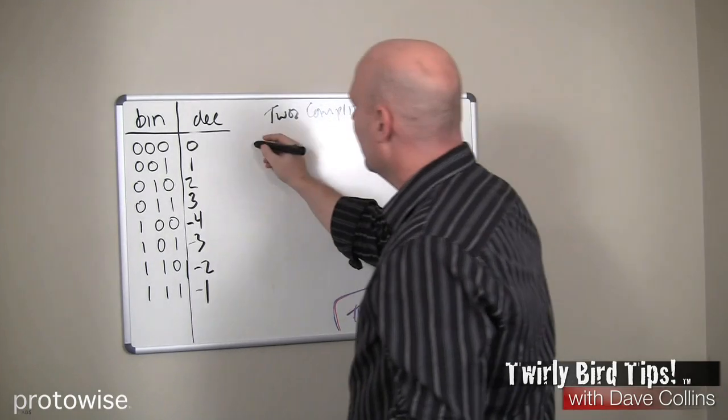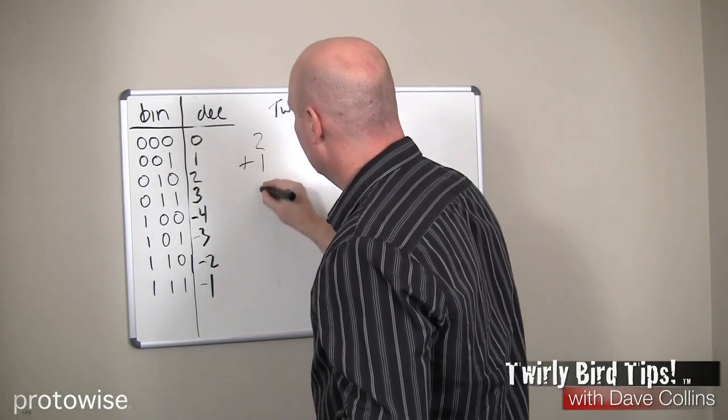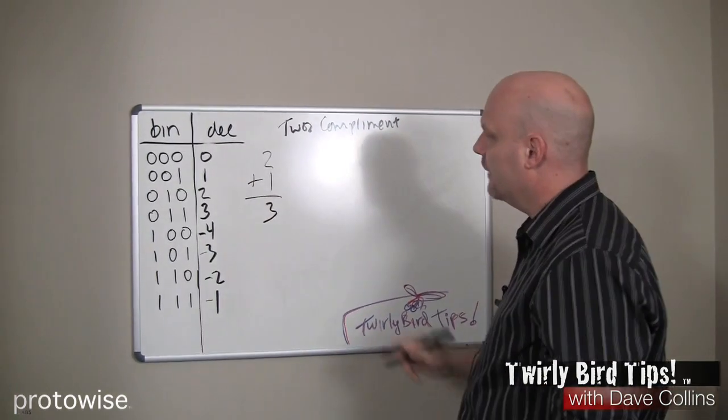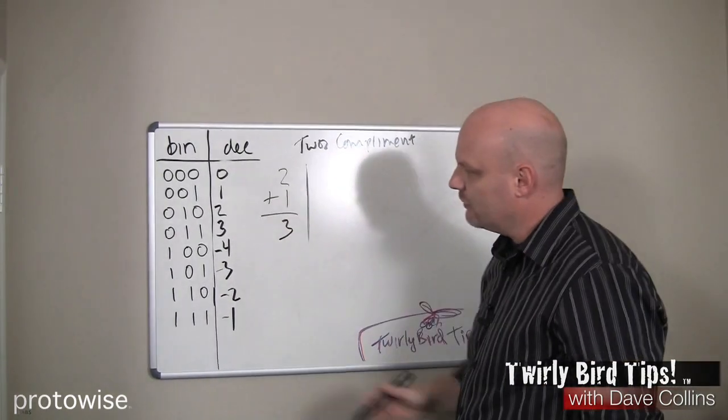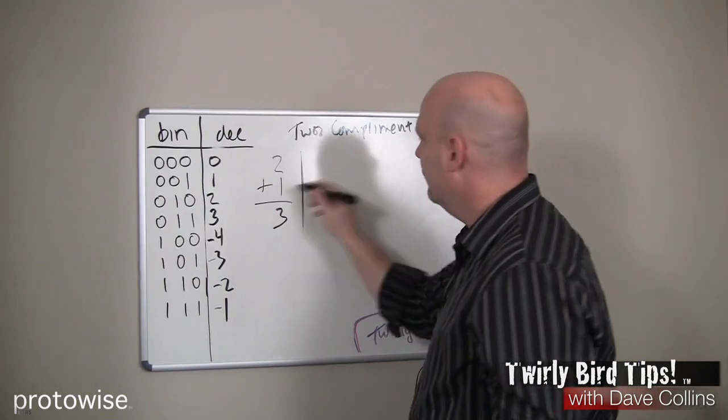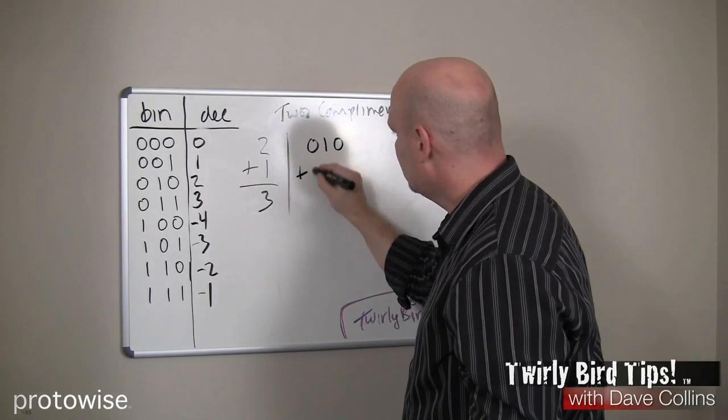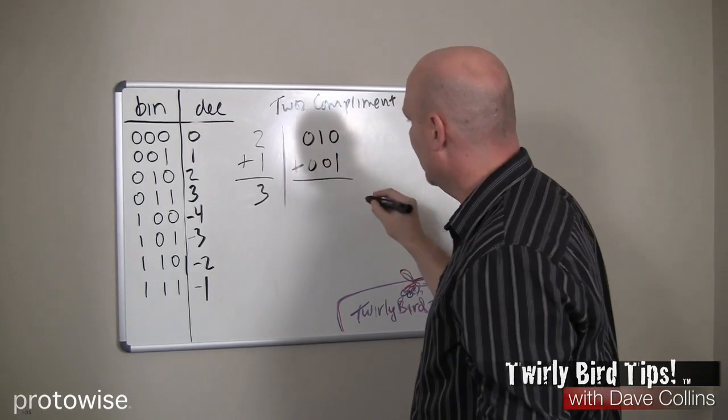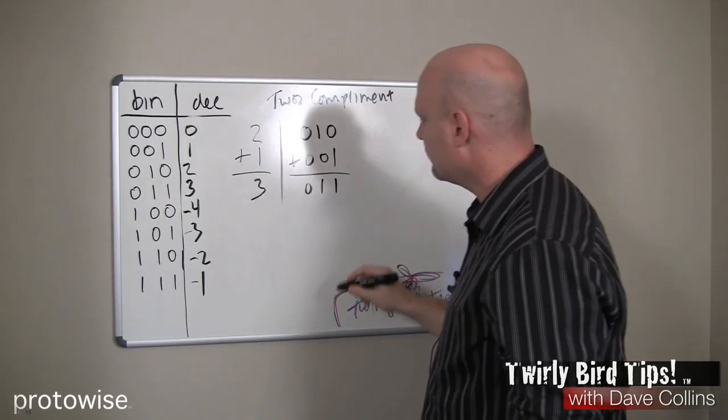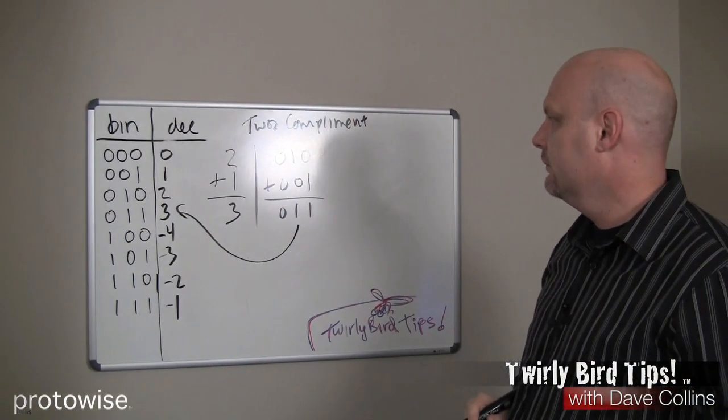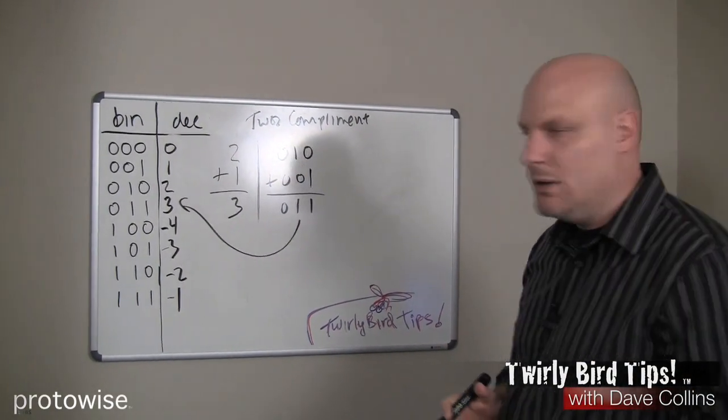So let's take a look at a few examples. Let's just do an addition problem to start. Let's say 2 plus 1. Keep it simple. Well 2 plus 1 is 3. And let's see what the binary equivalent in our two's complement system would be. Well 2 is a 0, 1, 0. If we add a 1, we're going to add 0, 0, 1. And we simply do the addition and we get an answer. 0, 1, 1 or 3. Not too exciting, but it works.